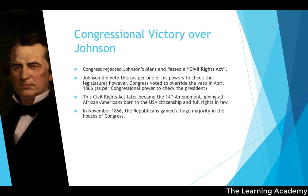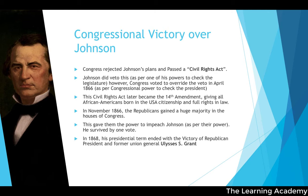In November 1866, Republicans gained a huge majority in the houses of Congress, giving them the power to impeach Johnson — another check Congress holds over the president. Johnson survived the impeachment process by only one vote. In 1868, his presidential term ended with the victory of Republican President and former Union General Ulysses S. Grant.